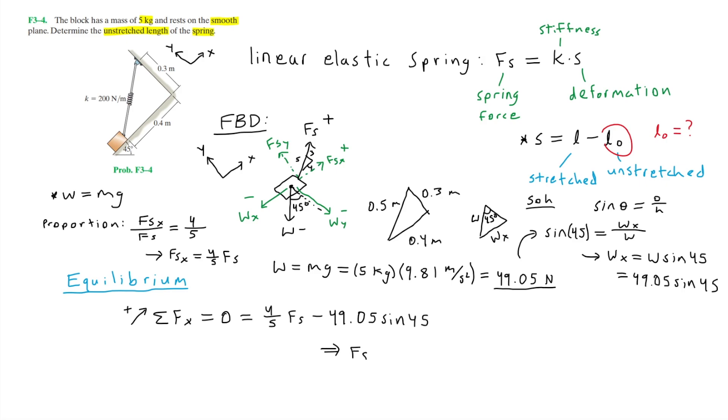That completes our equation. We can now solve for Fs, which is the spring force. Rearranging this and solving using a calculator, we get Fs equals roughly 43.35 newtons. We now know the value of the spring force, which means we can now use our spring force equation from earlier and solve for L0.